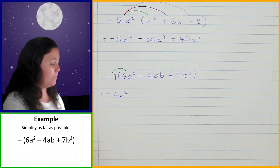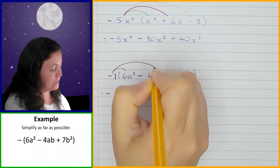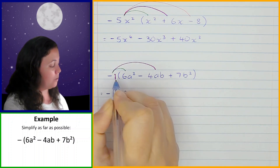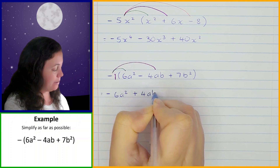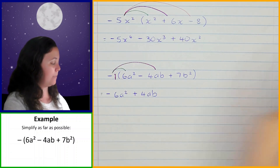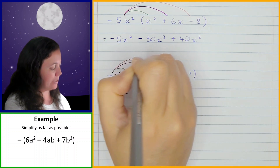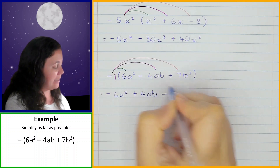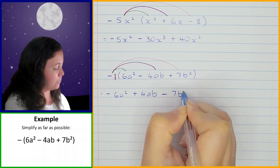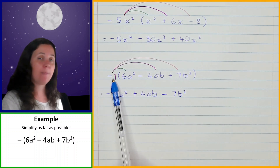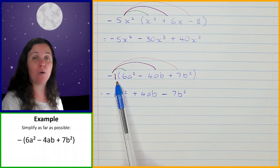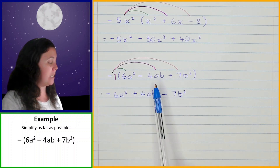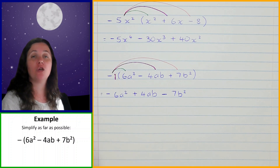When we multiply negative 1 by the next term, negative 4ab, it's negative times negative which is positive, and 1 times 4ab stays 4ab. And then negative 1 times 7b squared — negative times positive is negative, so it becomes negative 7b squared. When you have a negative in front of your bracket, remember it means negative 1, and every term inside the brackets is going to change sign.